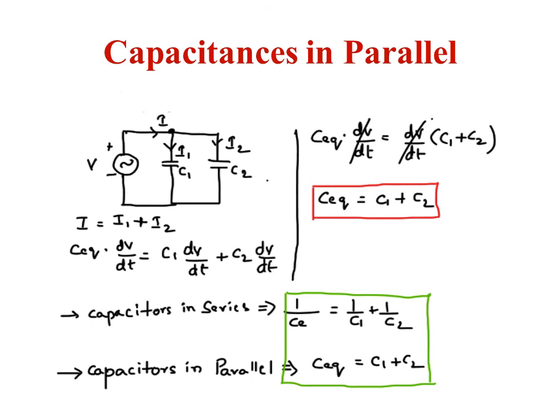To sum up: when two capacitors are connected in series, the equivalent capacitance is given by 1/C_eq equals 1/C1 plus 1/C2; when two capacitors are connected in parallel, the equivalent capacitance is C_eq equals C1 plus C2. In today's lecture we discussed what capacitance is, its units, how voltage and current relate across a capacitor, and how to calculate equivalent capacitance for series and parallel connections. Thank you.